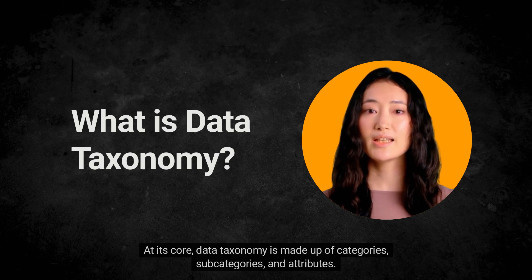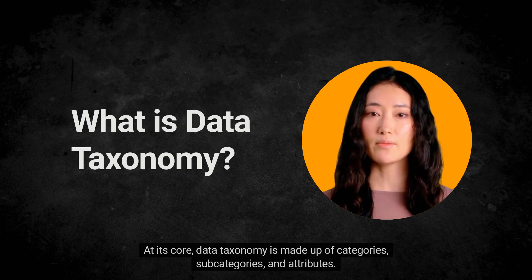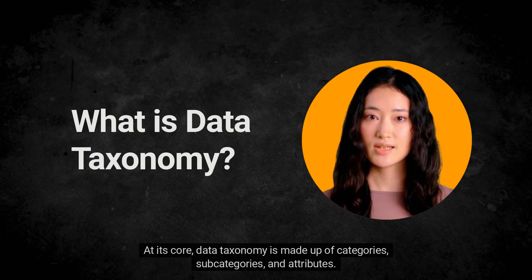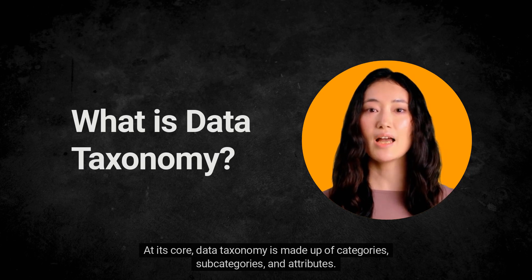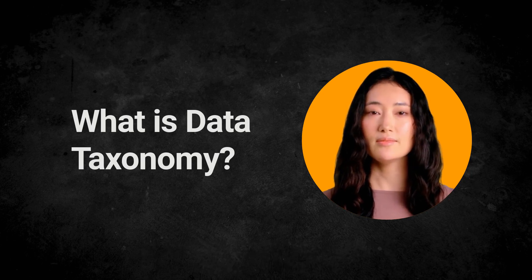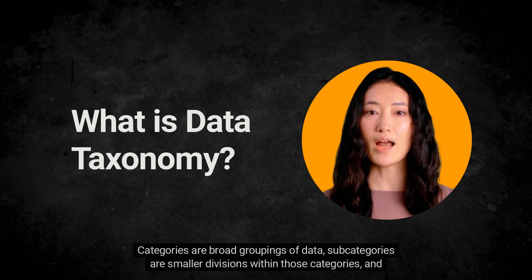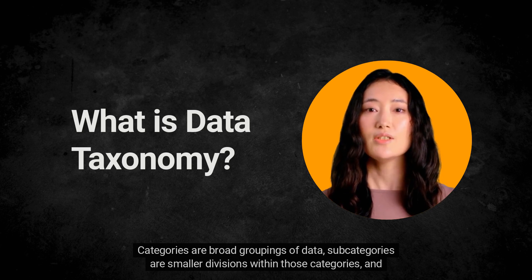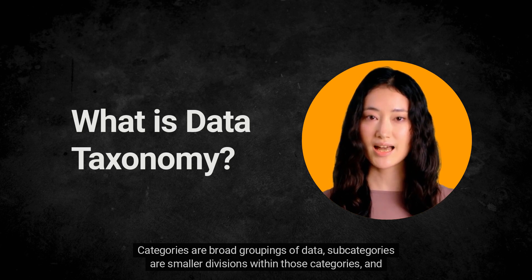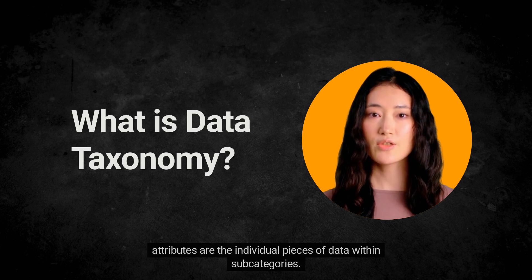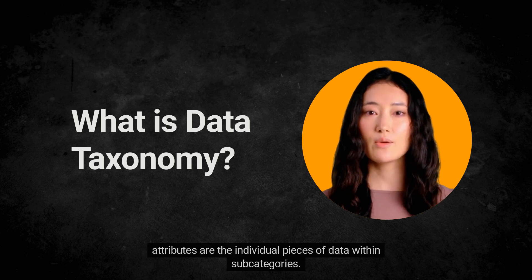At its core, data taxonomy is made up of categories, subcategories, and attributes. Categories are broad groupings of data, subcategories are smaller divisions within those categories, and attributes are the individual pieces of data within subcategories.